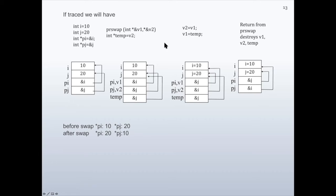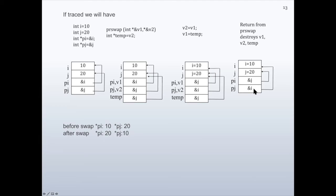Then there is a return from ptr_swap. v1, v2, and temp — the local variables and parameters — are destroyed and no longer available. Notice that before calling ptr_swap, pi contained address of i and pj contained address of j. After execution of ptr_swap, pi now contains address of j and pj contains address of i.